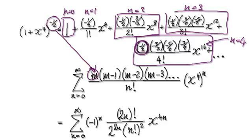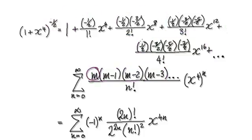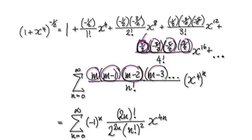So we would do this 1, 2, 3, 4. That means you start with your half, you would need 1, 2, 3, 4 terms. So half take away 1, then take away 2, then take away 3, and so on.